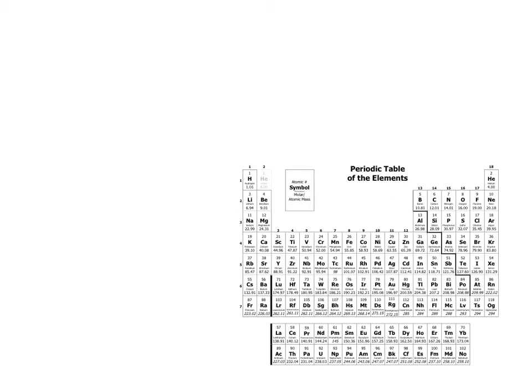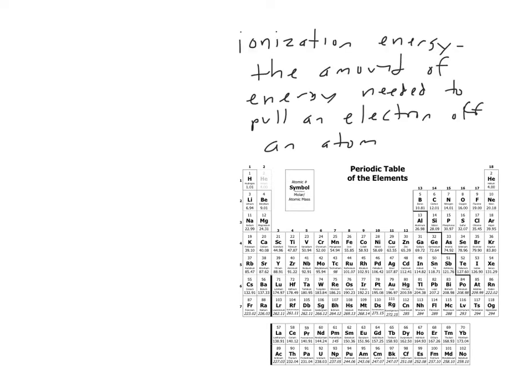Alright, so this video is on ionization energy. Ionization energy is defined as the amount of energy needed to pull an electron off an atom. If something has a high ionization energy, it's very hard to do this because it requires a great deal of energy. If something has a low ionization energy, it's very easy to do this because it has a very low amount of energy required.